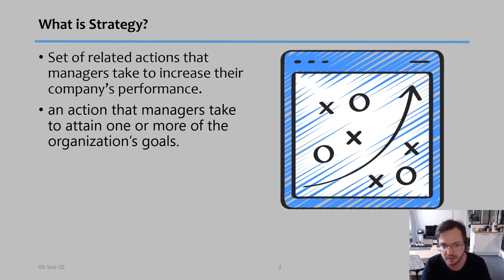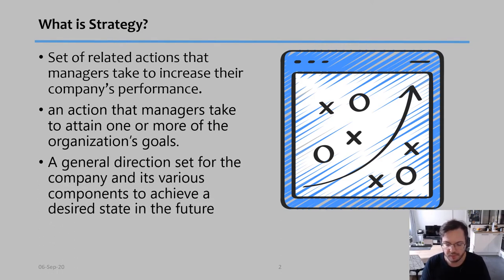This is interesting because sometimes we don't only have one specific goal, we might have several of them. A final definition is that strategy is the general direction set for the company and its various components to achieve a desired state in the future. What we see in all three definitions is that there are similar elements: there's always a goal, there's actions and plans, and those actions need to coordinate among themselves to achieve that goal.